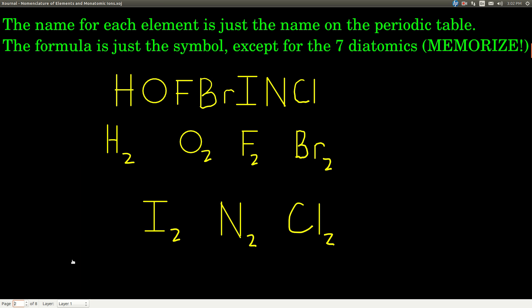So let's start with elements. Elements are just — the name of them is just the same name as in the periodic table. And the formula is just the symbol that's in the periodic table. Easy as that.